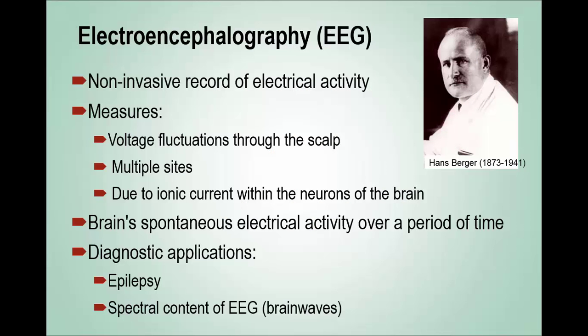I will only provide a brief introduction to some of these technologies to show how they have been applied in the study of dissociative disorders. Because of its unique relevance and relative lack of familiarity, I would like to start with brain electrical activity mapping and its predecessor, the electroencephalogram. Hans Berger was the first scientist to measure electrical activity in the brain, and modern EEG is now a non-invasive record of cortical electrical activity, measuring voltage fluctuations through the scalp as a result of movement of ions over the cell wall of brain cells.